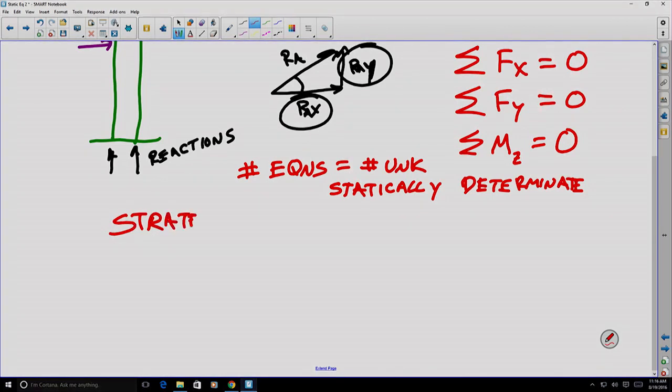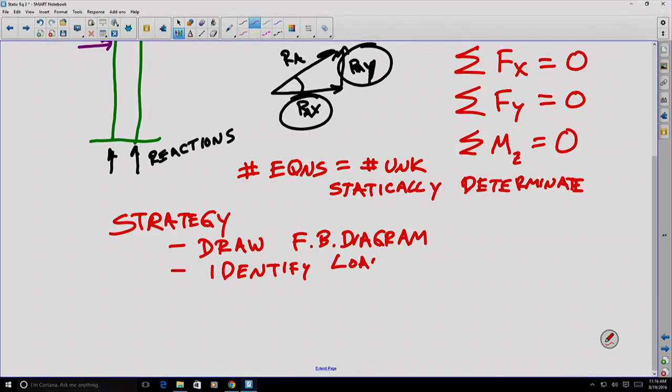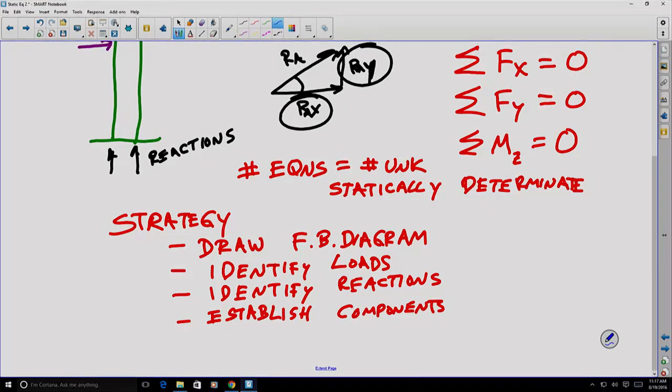Let's lay out our strategy. First, draw our free body diagram to separate the body of interest from the various supports. Identify the loads - what information do we know? What forces do we know? Identify our reactions - what forces do we not know but are interested in knowing? Then establish our components in some sort of global basis. Traditionally we'll use vertical and horizontal to establish components for each of our loads and reactions.